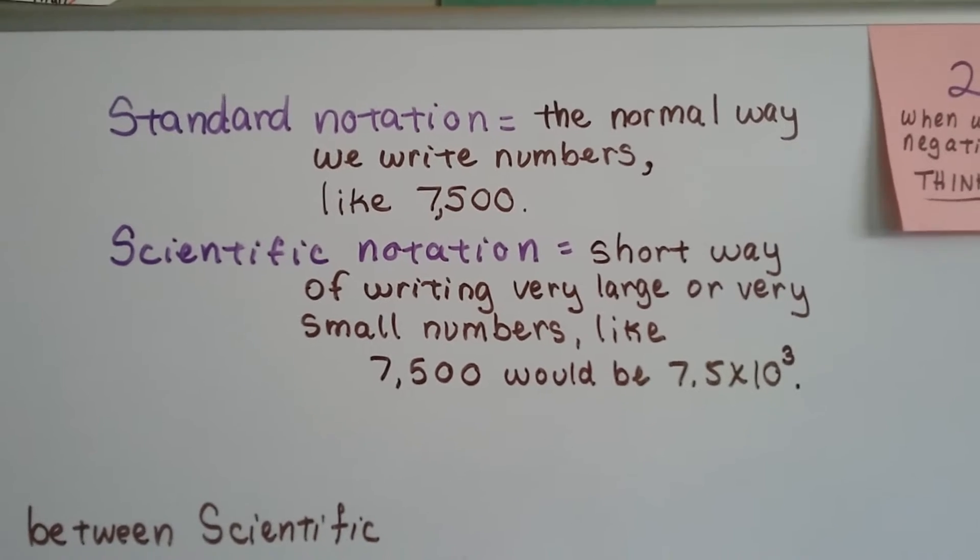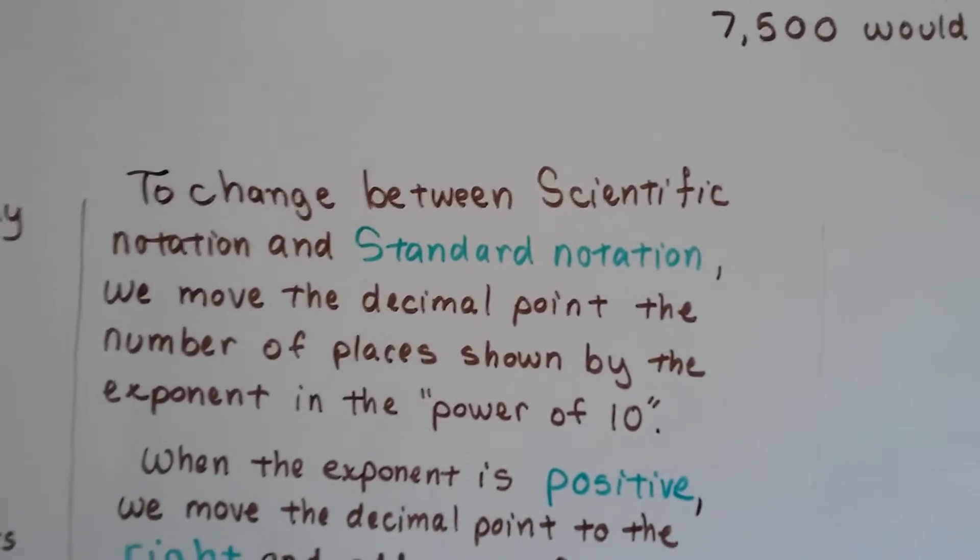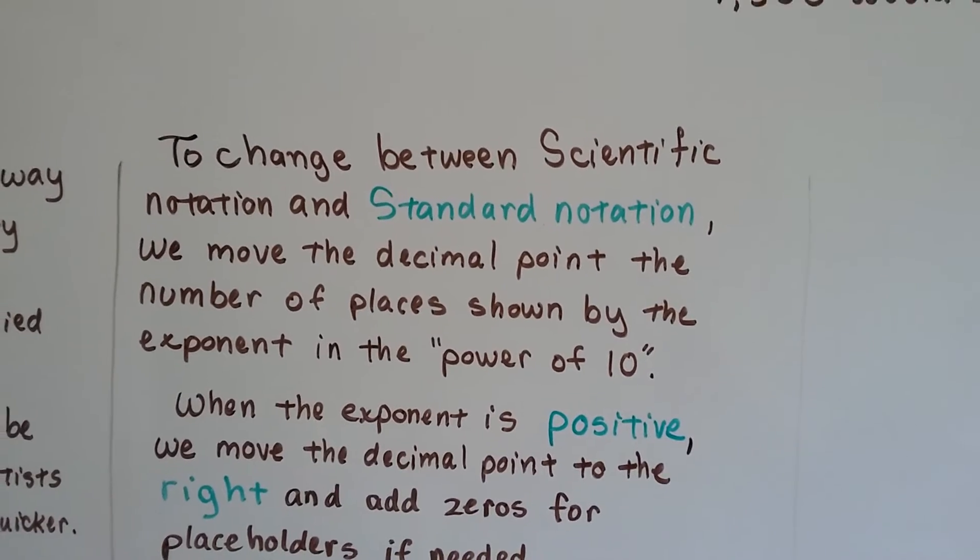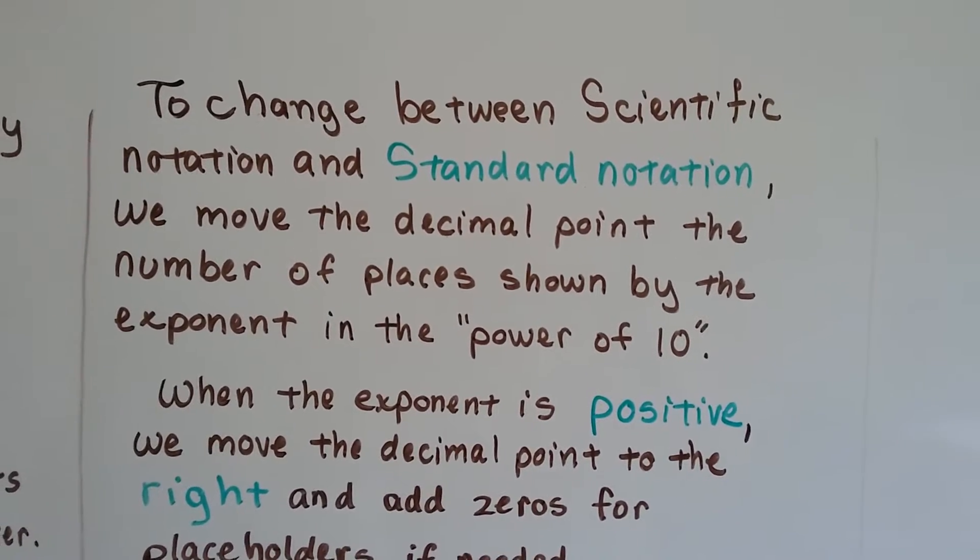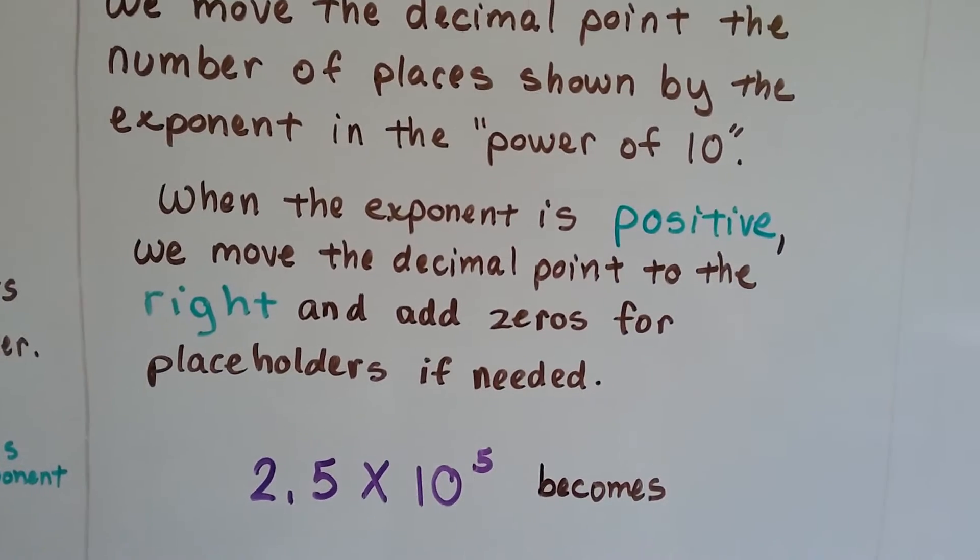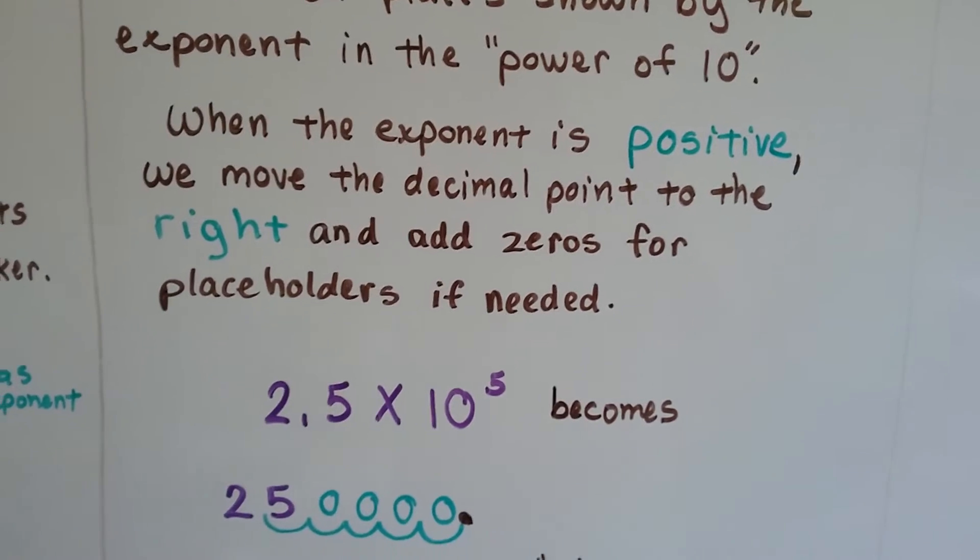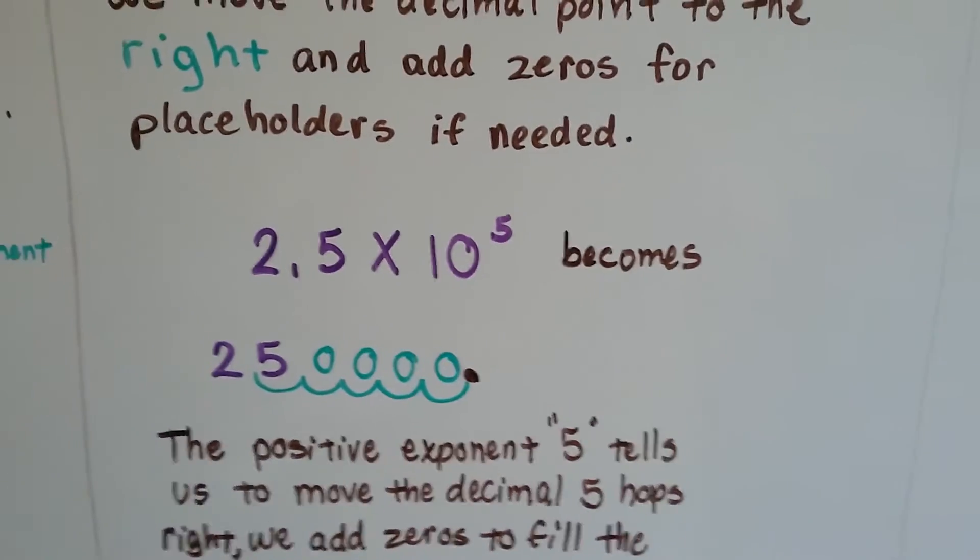We move the decimal place over three times. To change between scientific notation and standard notation, we move the decimal point the number of places shown by the exponent in the power of 10. When the exponent is positive, we move the decimal point to the right and add zeros for placeholders if needed.